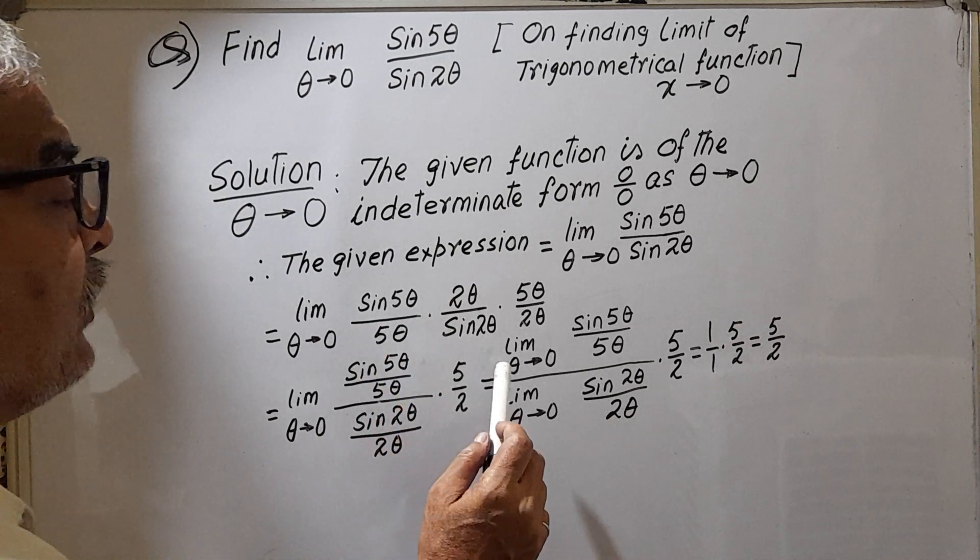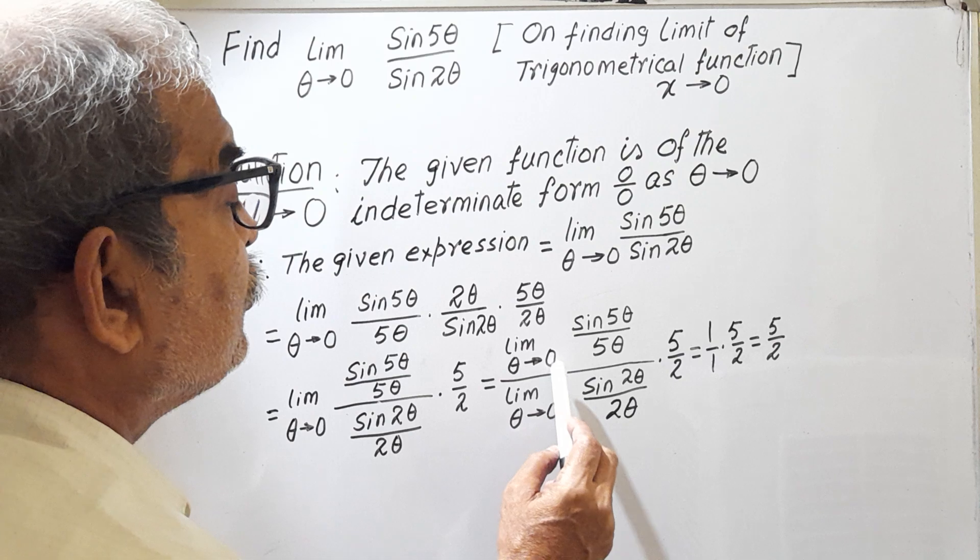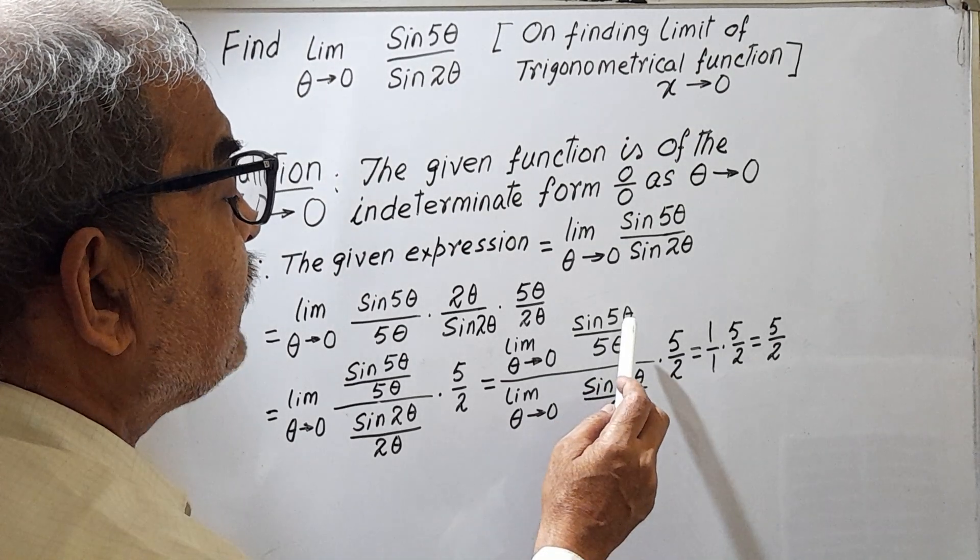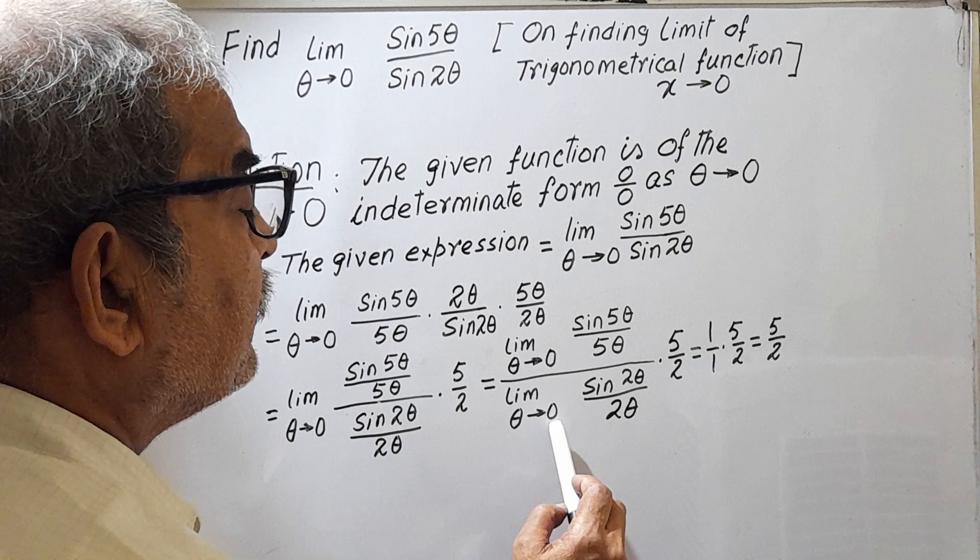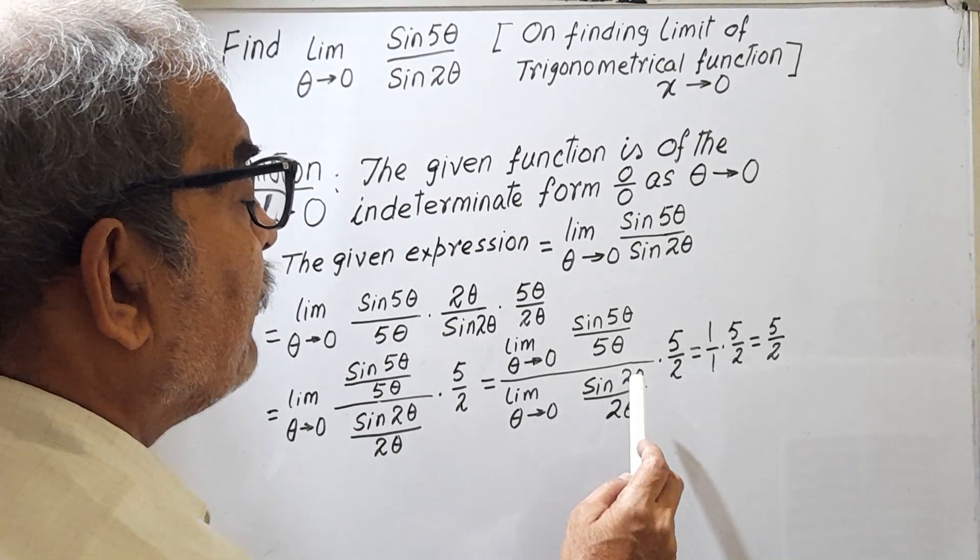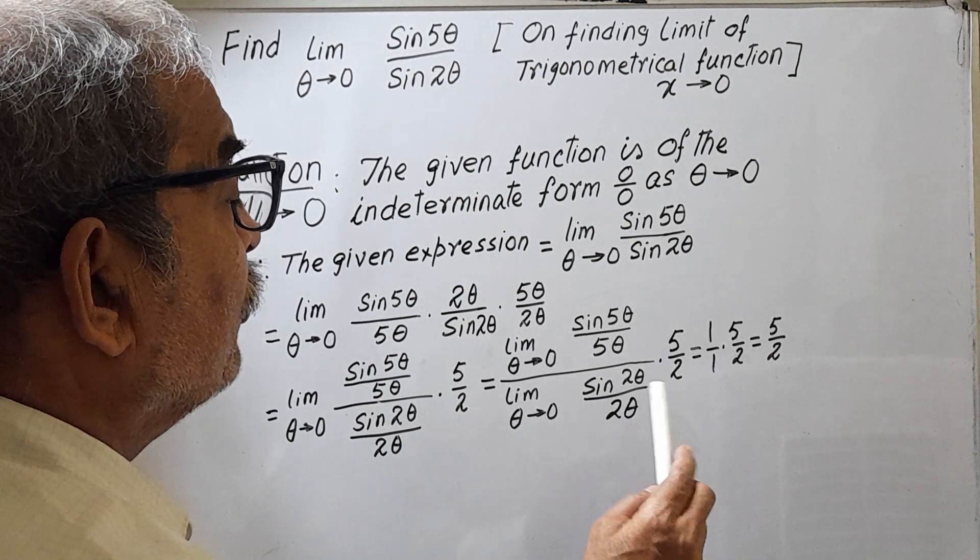Now we are doing this in another way. Limit theta tends to 0, sin 5 theta by 5 theta, divided by limit theta tends to 0, sin 2 theta by 2 theta, into 5 by 2 as it is.